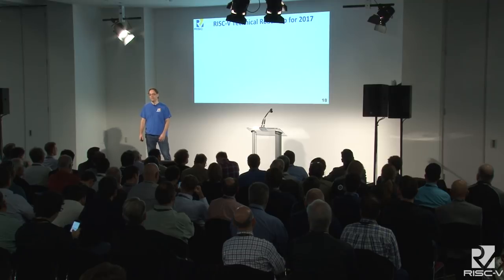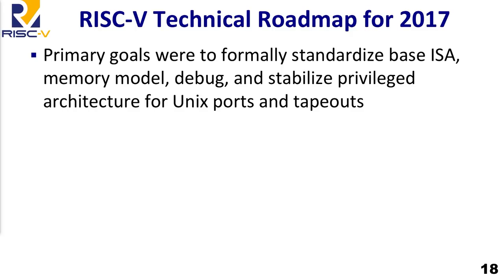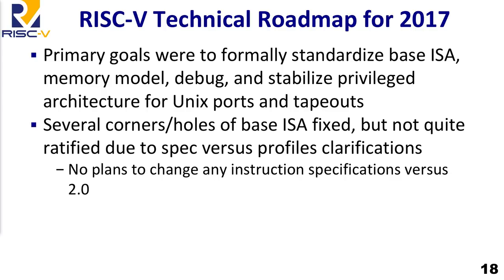Now diving into the technical roadmap for 2017. One of the key functions of the foundation is to progress the standard. Our primary goals were to standardize the base ISA, settle outstanding issues with the memory model and debug, and stabilize the privileged architecture for UNIX platforms. We've made pretty good progress — we've spent a lot of time fixing corner cases, holes, and ambiguities in the base spec, though we haven't quite ratified the standard yet.